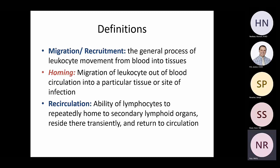Homing refers more specifically to the tissue the leukocyte is moving into, whereas recruitment refers to that movement from blood to wherever it's going. Recirculation is the ability of lymphocytes to repeatedly home to secondary lymphoid organs, reside there transiently, and then return to the circulation — and there is a purpose to that as well.